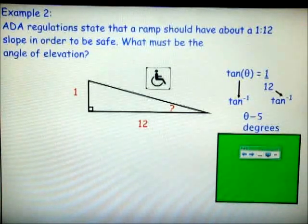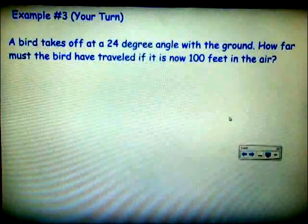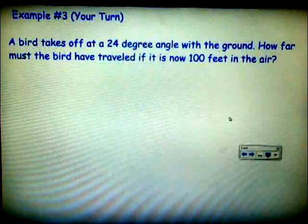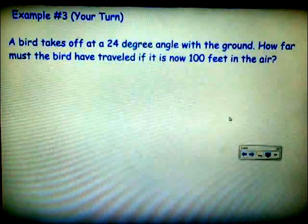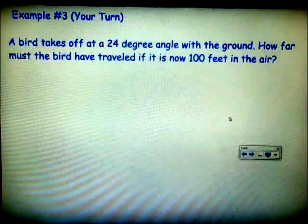Now, like I said before, you're not always given a picture in these scenarios. So in your final example, which is going to be your turn, our example here does not have a picture. So what you want to be able to do is take the information in the problem and draw a right triangle that mimics this situation. We will discuss this in class tomorrow.